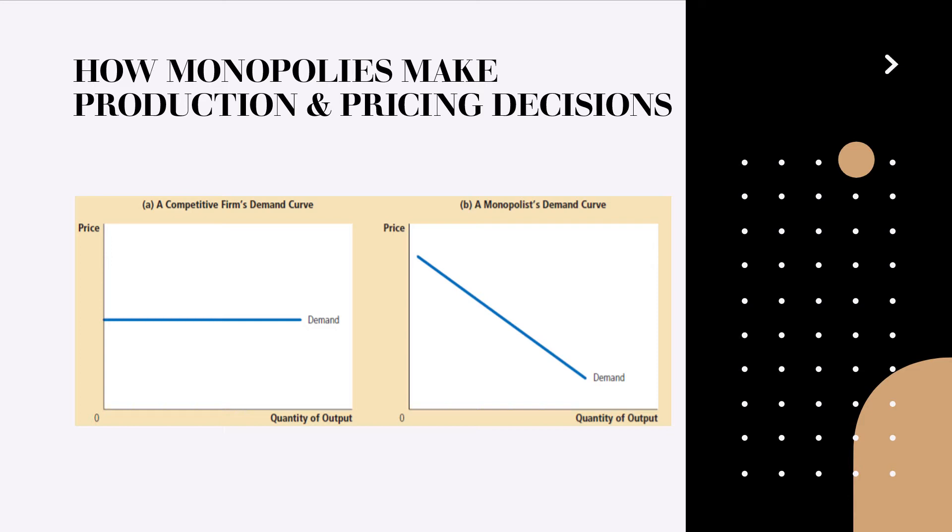The monopoly has the power to set its own price. It's not a price taker. But as always there is a trade-off. To accept a lower price if it wants to sell more output.